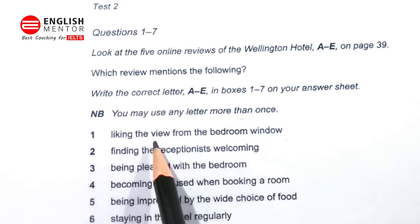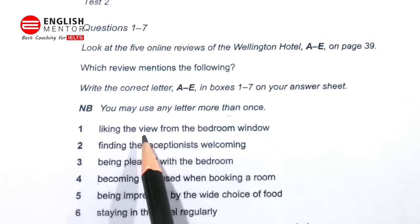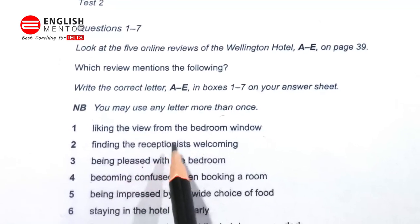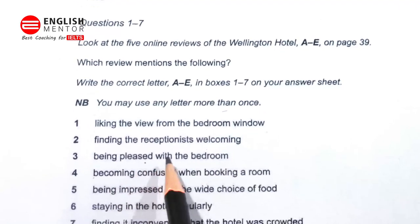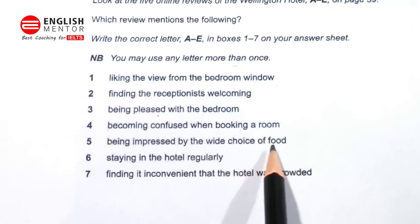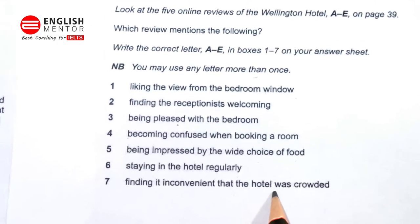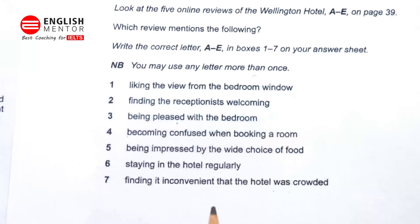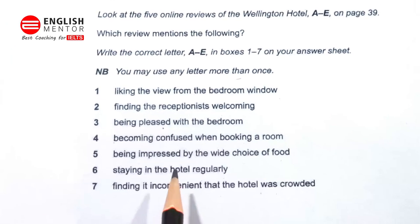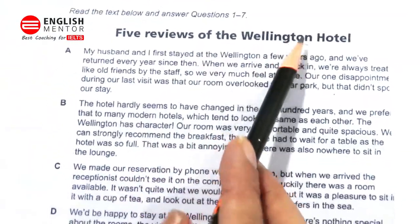In this type of question, the best way to attempt it is to just read all the options first. For example: liking the view from the bedroom window, finding the receptionist welcoming, being pleased with the bedroom, becoming confused when booking a room, being impressed by wide choice of food, staying in a hotel regularly, finding it inconvenient that the hotel was crowded. Now you have a little bit of an idea about what type of information you are looking for in the paragraph.